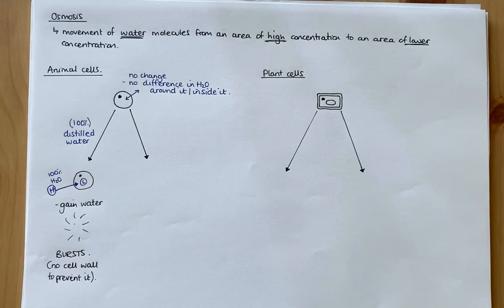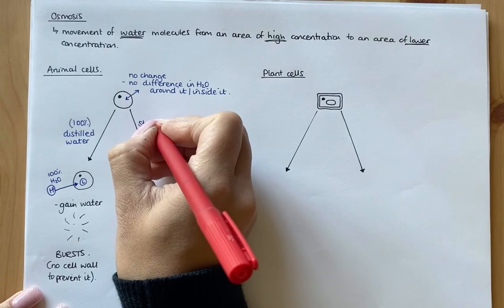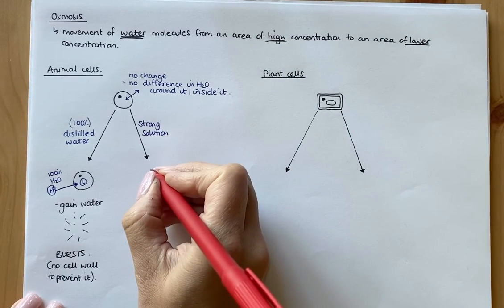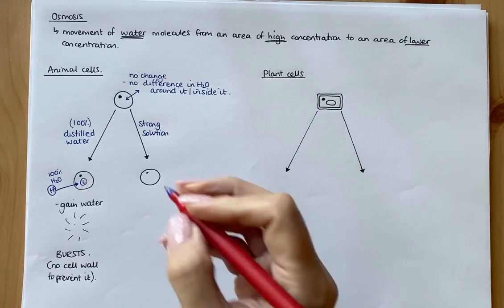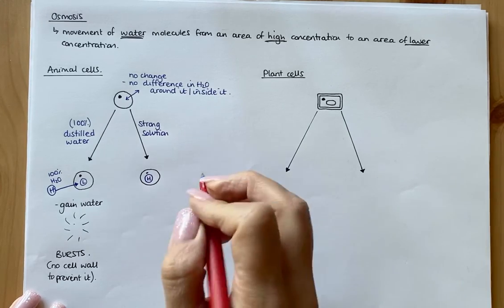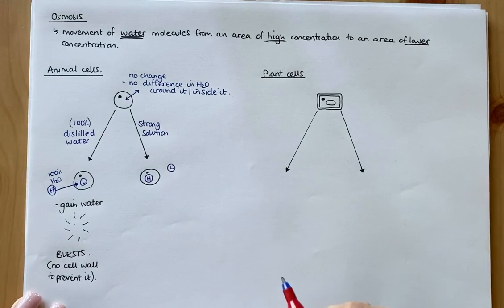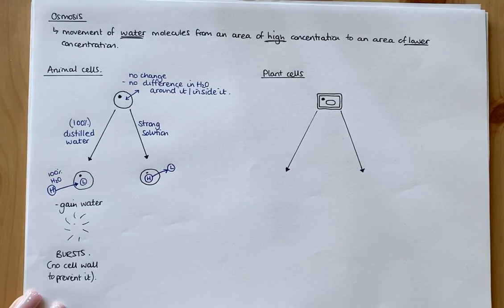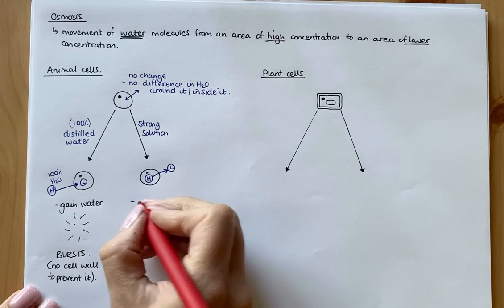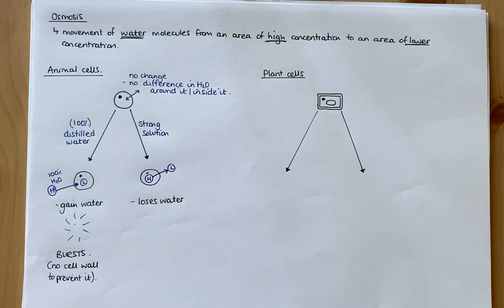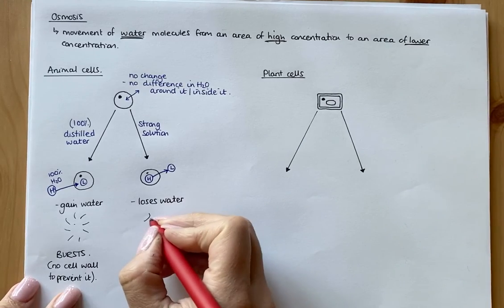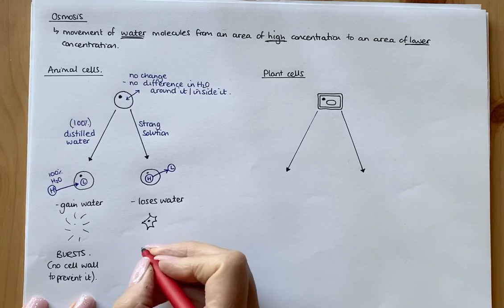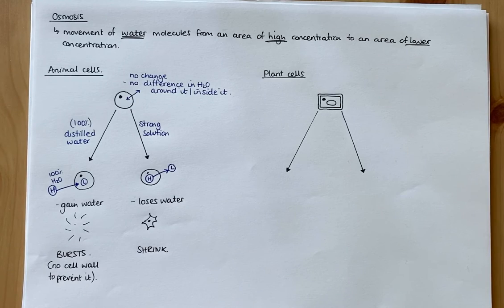Now placing that animal cell in a strong salt solution — or strong solution of any kind, sugar or salt — that strong solution has a lower water concentration than the cell does inside. The cell has a higher water concentration and the strong solution has a lower concentration, so water is going to move from inside to outside. Because water always goes from high to low concentration, that cell loses water due to osmosis. Think of it like a water balloon — if you take water out of it, it'll shrink. So that animal cell shrinks.